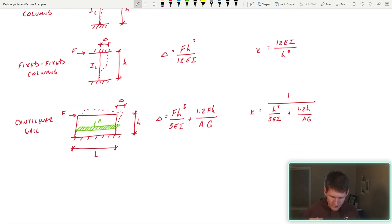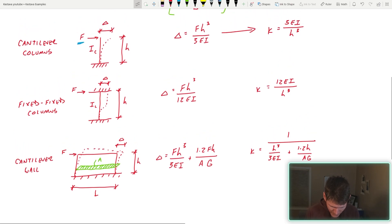Fixed-fixed columns, same variables given in my figure here, except the equation for displacement changes very slightly. You get rid of the three and you add a 12 instead. Inverse that, looks the same as above, just there's a 12 instead of a 3. Same thing. Fixed-fixed columns, there's no shear deformation. I know I kind of drew it like there is shear deformation in my dashed figure, but it's really all flexural driven.